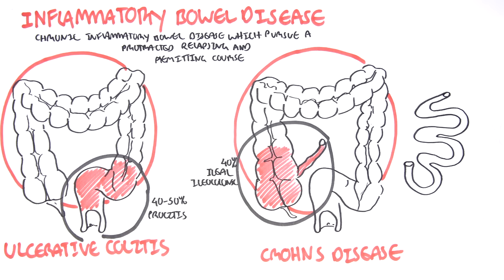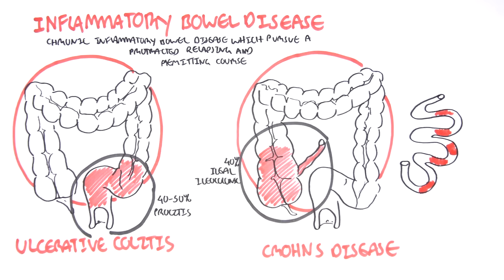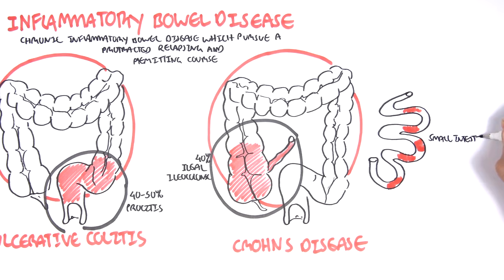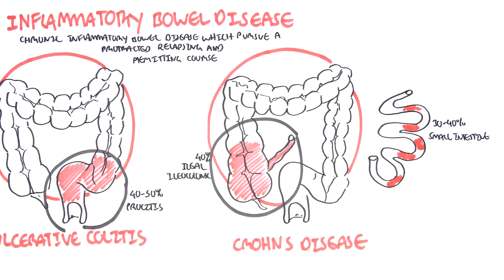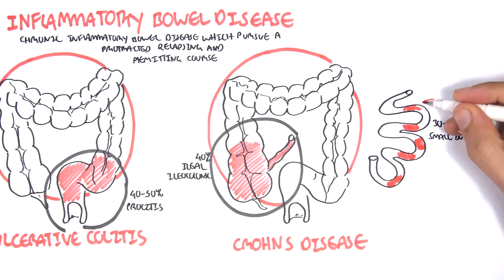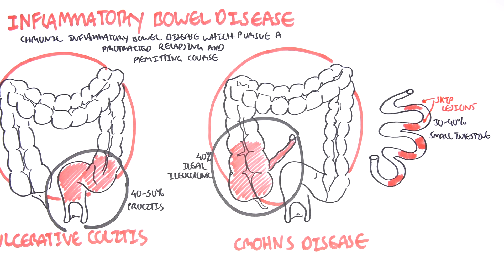The second most common area affected in Crohn's is the small intestine, about 30% to 40% of cases. In the small intestine, we see the inflammation in segments. This is termed skip lesions, because you have inflammation, then no inflammation, then inflammation again, and so on.